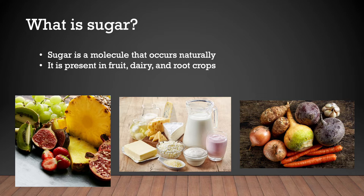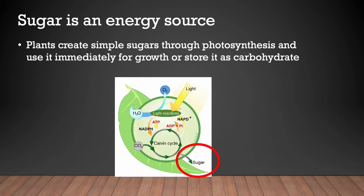What is sugar? Sugar is a molecule that occurs naturally. It's found in ripe fruit, in dairy products, and in root crops. Sugar is an energy source. Plants create simple sugars through photosynthesis. You can see here by the infographic that H2O and CO2 interact with light in the chloroplast of the cell, and the little red circle pops out some sugar. So it's a natural process that starts at the molecular level within plant tissue.